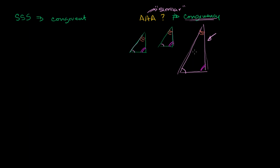For example, all three of these triangles are similar to each other, but they aren't all congruent. These two are congruent if their sides are the same — but neither of these are congruent to this larger one right over here, because it clearly has the same shape but a different size. So we can't have an AAA postulate or axiom to get to congruency.